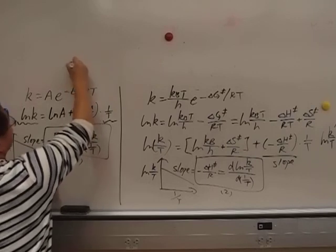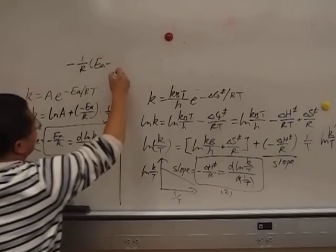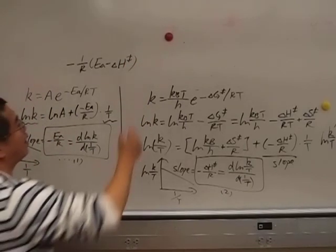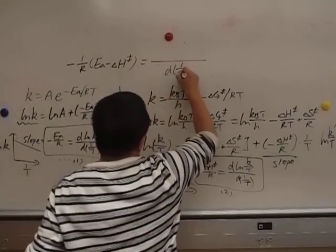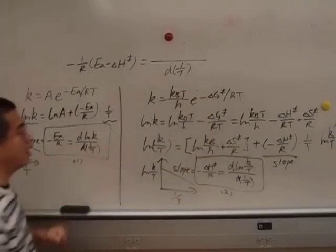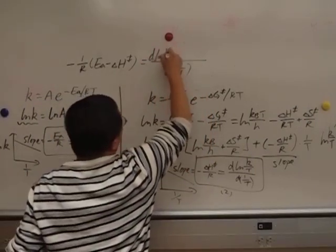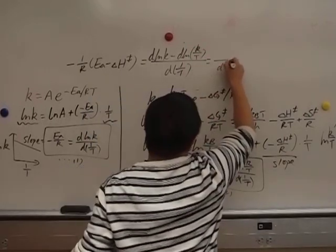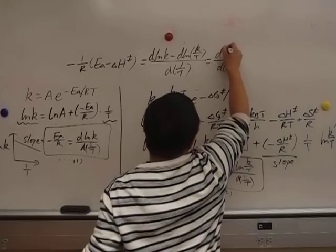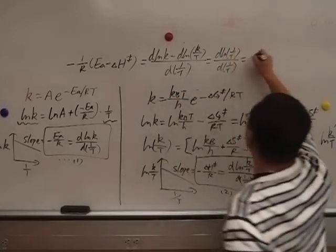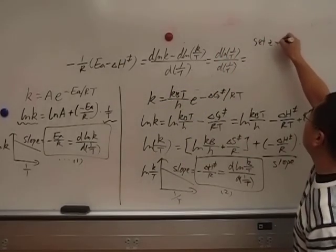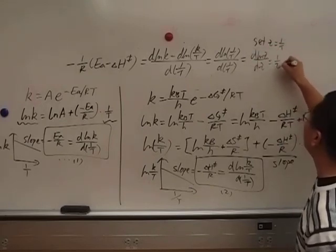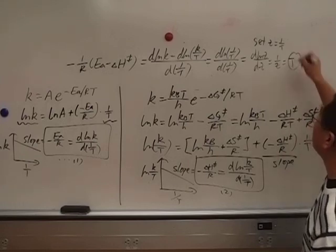On the left hand side it's d ln K minus d ln K over T, which is d ln(K/T) over dz. If you set z equals 1 over T, basically it's d ln K over dz which is 1 over z, and 1 over z is T.